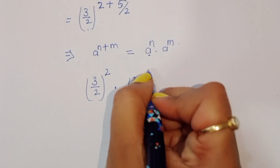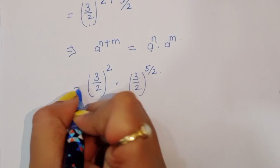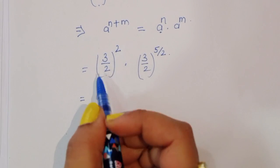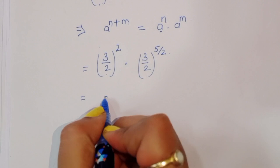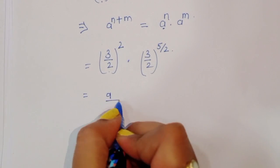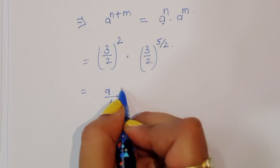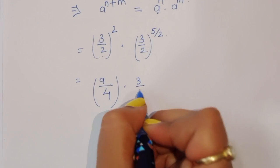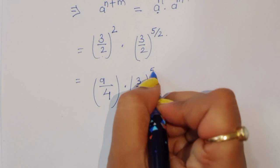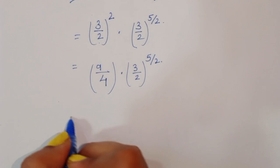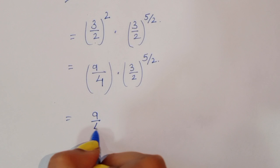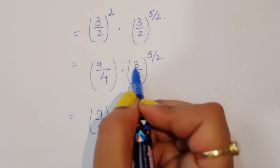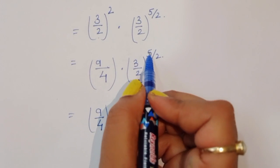Now (3 over 2) raised to power 2 equals 9 over 4, since 3 squared is 9 and 2 squared is 4. So we have 9 over 4 times (3 divided by 2) raised to the power 5 over 2.